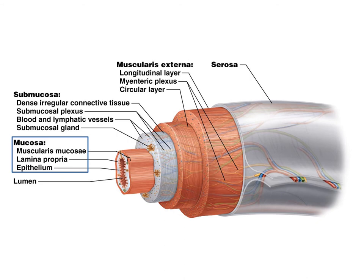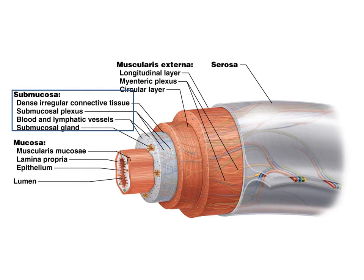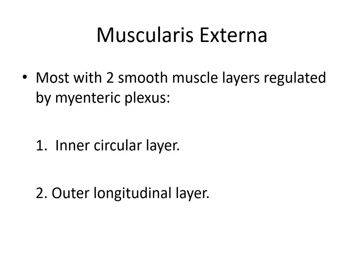These are showing the three layers of the mucosa layer. External to that is the submucosa layer, which is composed of dense irregular connective tissue. It includes the submucosal plexus of the enteric nervous system. Remember, the enteric nervous system is a component of the autonomic nervous system, separate from the sympathetic and parasympathetic nervous systems. Here's the submucosa layer. The muscularis externa — most parts of the digestive system have two muscle layers, regulated by the myenteric plexus.